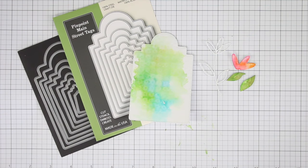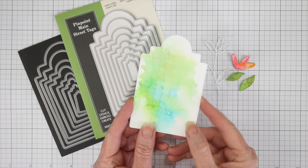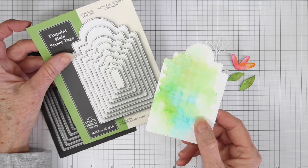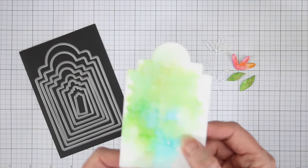Once all my papers were dry, I decided to make a tag card. So I've used the Pinpoint Main Street Tags from Memory Box, and they're nested tags, but they have a really nice dot on them.